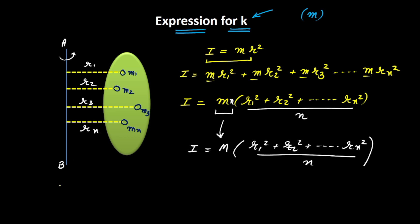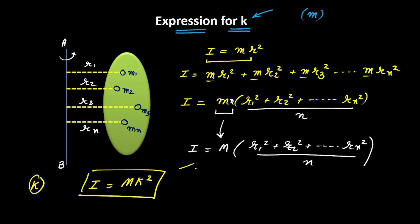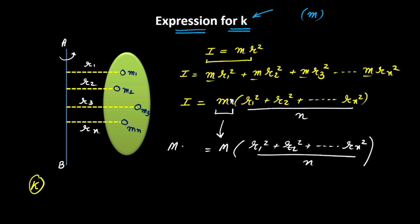Let us say the radius of gyration of the entire system is K. As per the definition, I = MK², because the entire mass M is assumed to be concentrated at distance K to produce the same moment of inertia. Equating the two expressions, MK² = M × (R1² + R2² + ... + Rn²) / N. M and M cancel out.